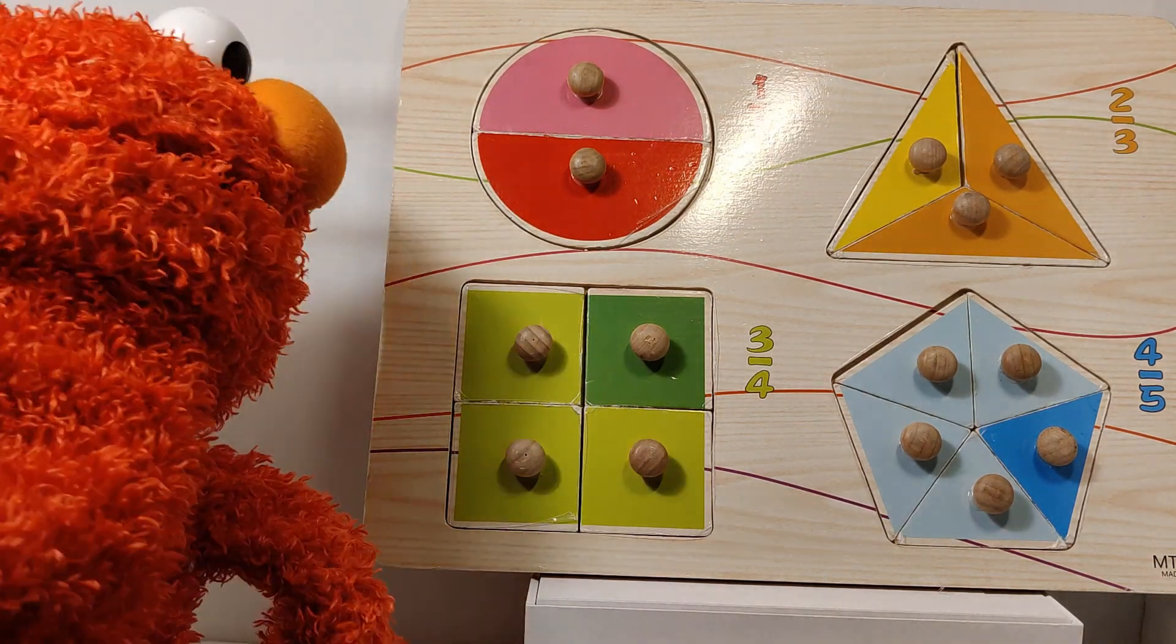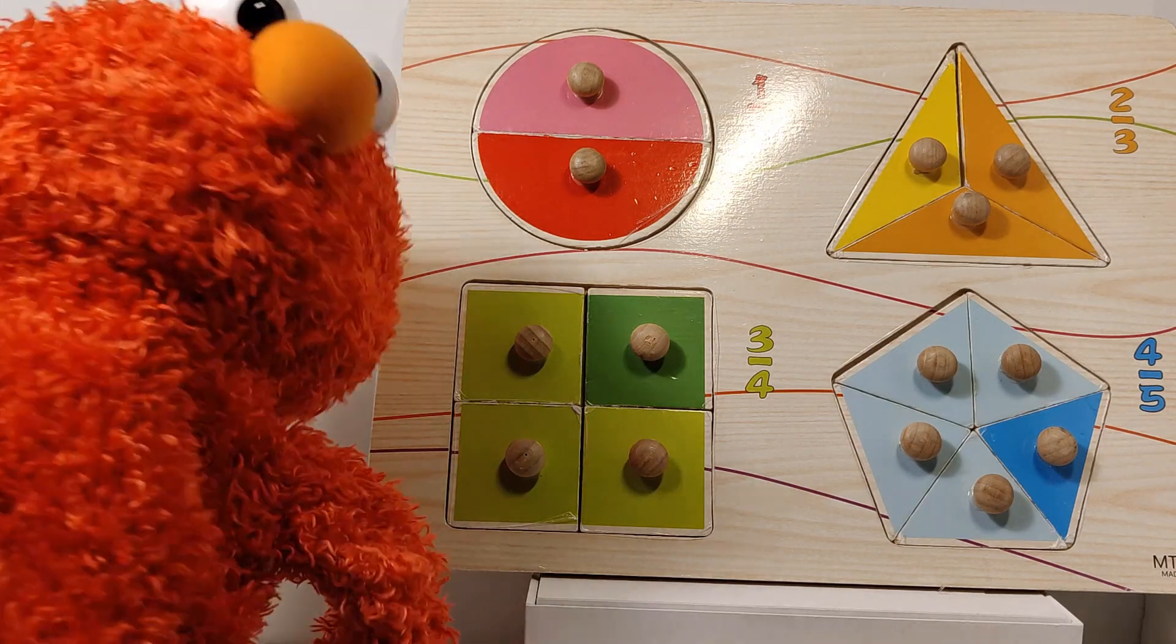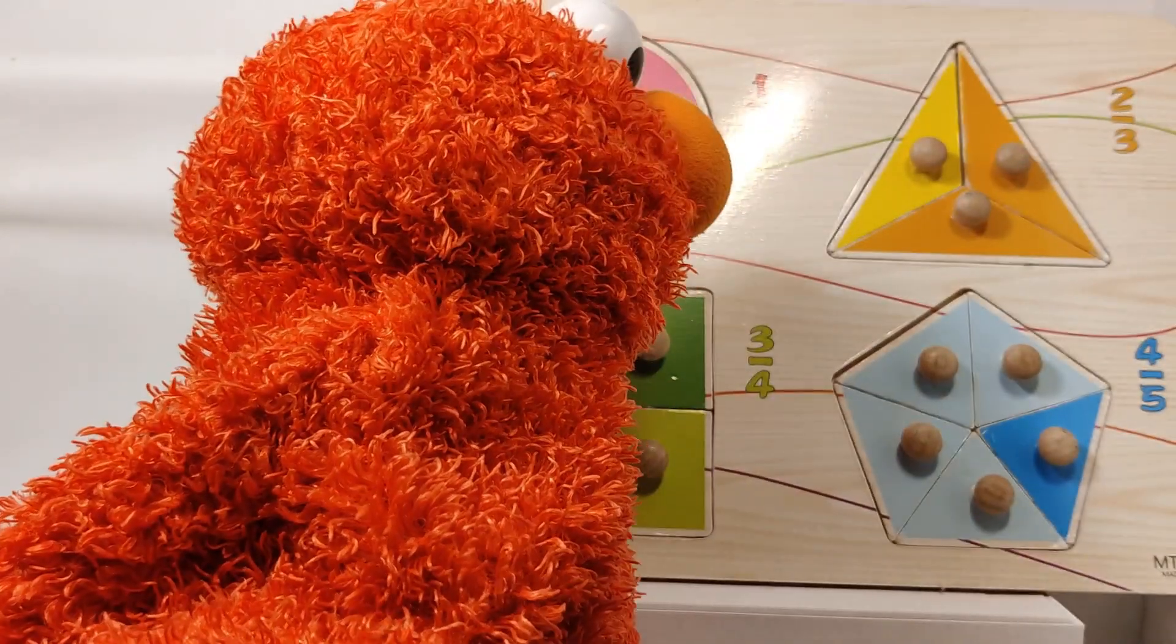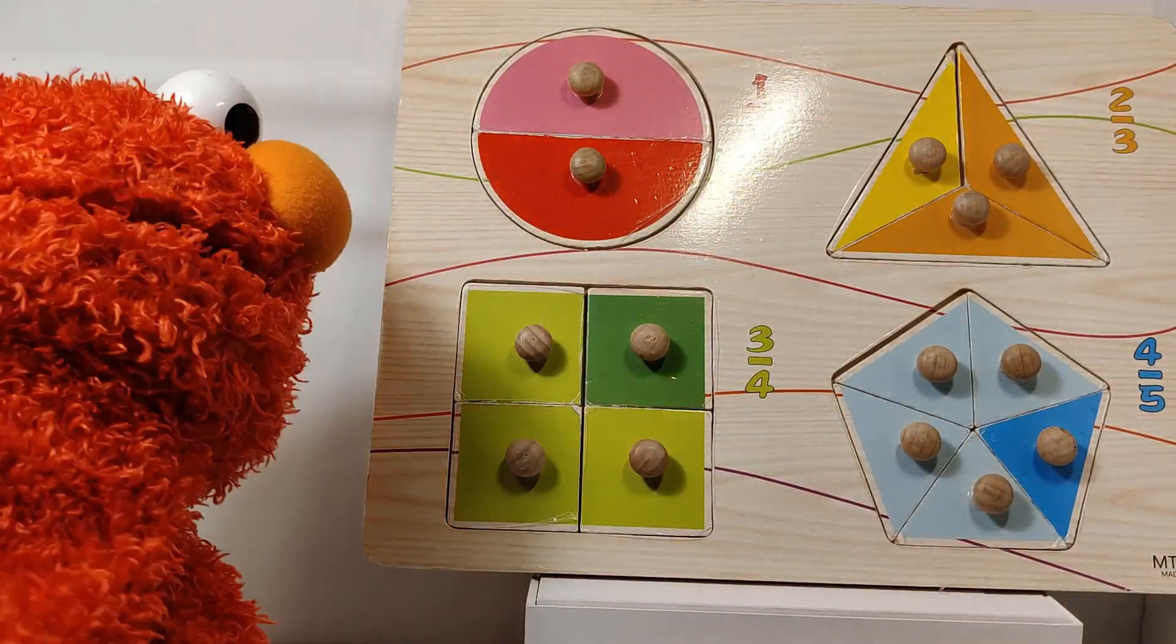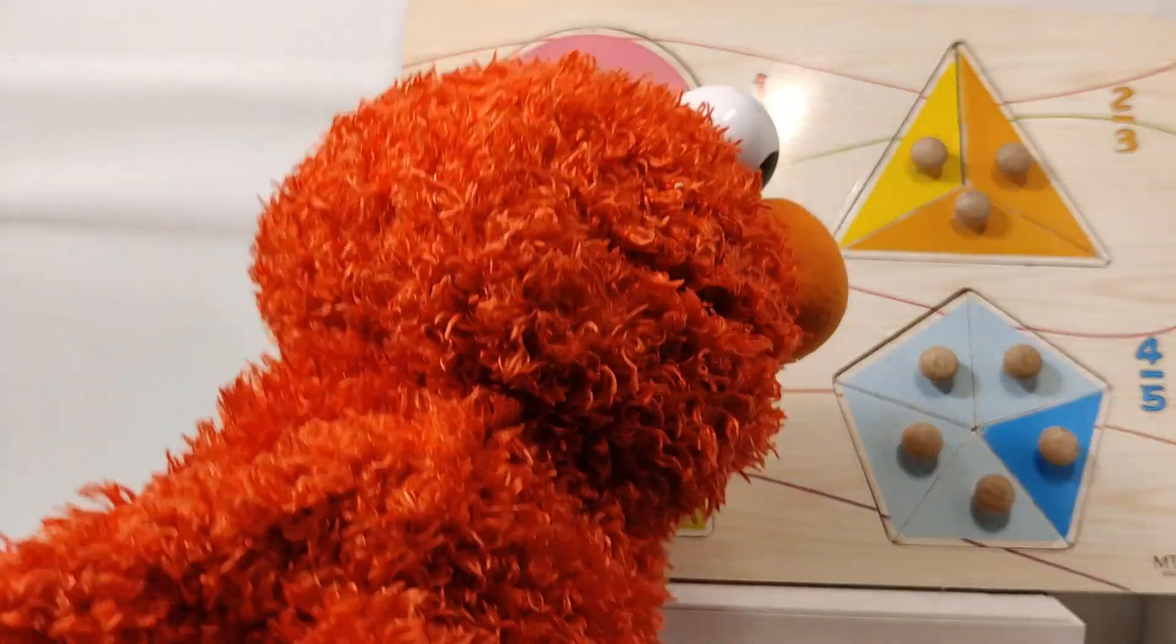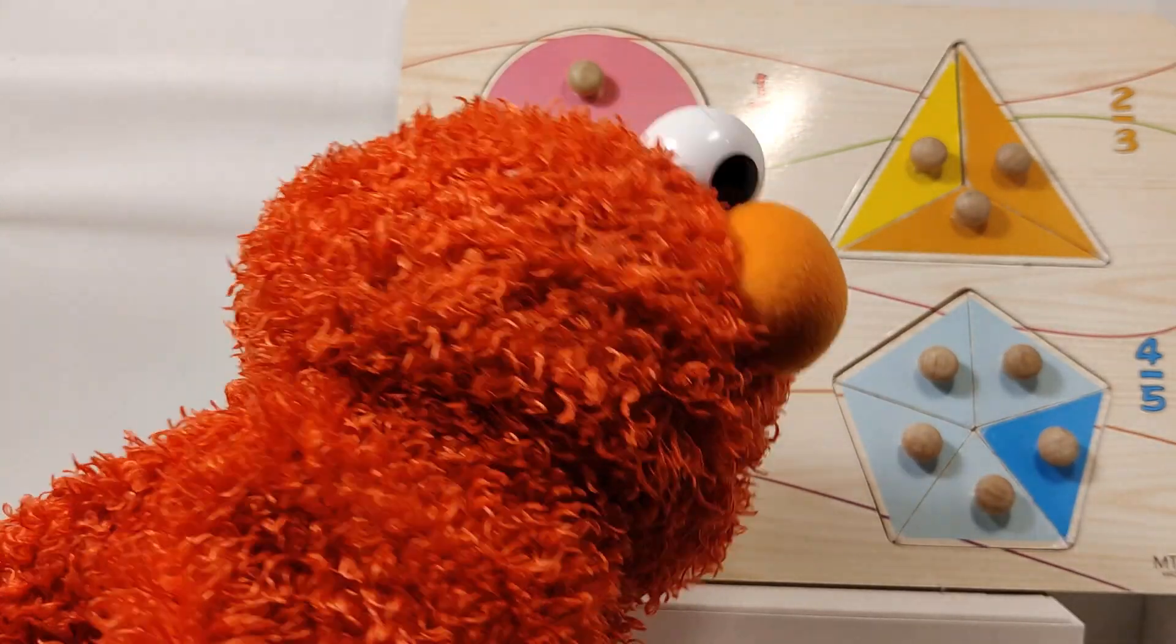You can see here, I've got circle, this is 1 over 2. I've got triangle, this is 2 over 3. I've got square, this is 3 over 4. And I've got pentagon, this is 4 over 5.